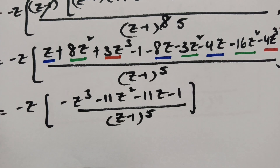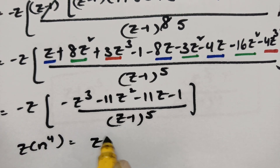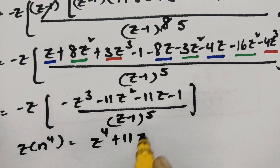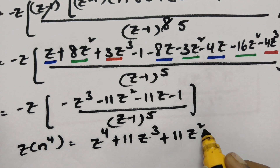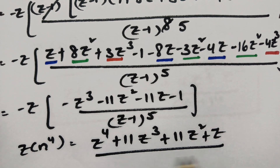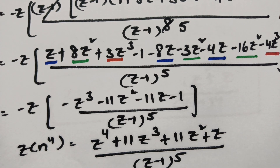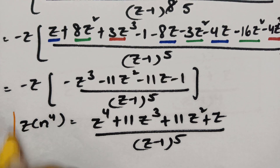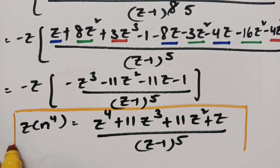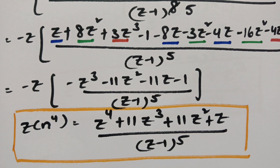After cancellation 5 times remain. Multiplying out and combining terms: z cubed terms give minus z cubed; z squared terms 8 minus 3 minus 16 give minus 11z squared; z terms give minus 11z; constant minus 1, all over z minus 1 to the power 5. Multiplying by minus z gives Z of n to the power 4 equal to z to the power 4 plus 11z cubed plus 11z squared plus z by z minus 1 to the power 5.